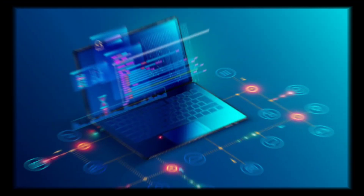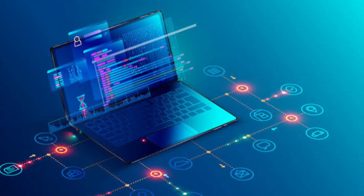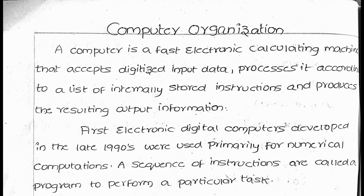First, we will know what is a computer. A computer is a fast electronic calculating machine that accepts digitized input data, processes it according to a list of internally stored instructions, and produces the resulting output information. If we have a computer, we can input data and output results very fast.